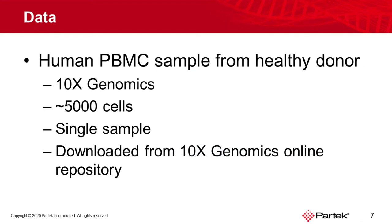The dataset I'll be using to demonstrate these features is a human PBMC sample from a healthy donor. This is a 10x Genomics dataset, although we support single-cell data from any platform. Roughly 5,000 cells were screened in this sample. These were cells from a single individual, although we do support multiple samples as well. I got this data by downloading it from the 10x Genomics online repository.